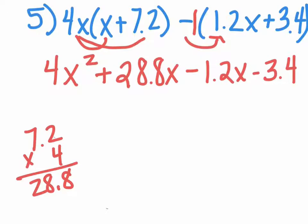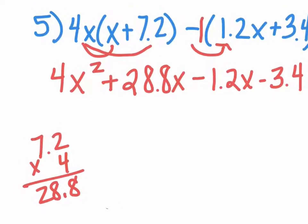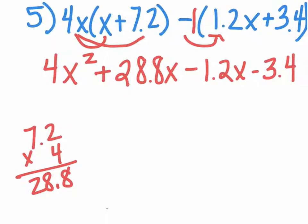Now we're going to combine our like terms. There's no other 4x², so we write 4x². Now we're going to combine 28.8x minus 1.2x.